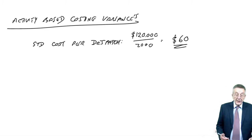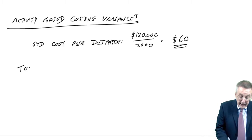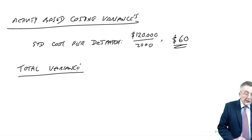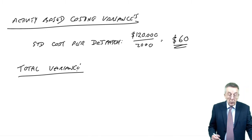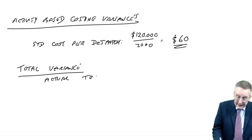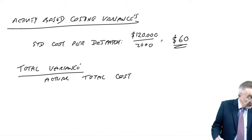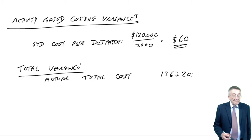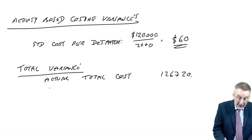And so let's look at variances. And first of all, let's look at the total variance. And when we've got the total, then we'll analyze it. And so what's the total variance? We'll do it in exactly the normal way. We'll take the actual total cost, which is 126,720.